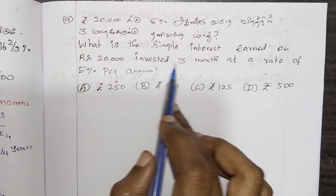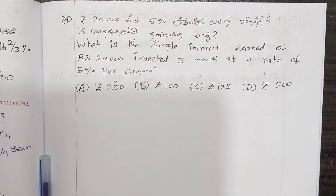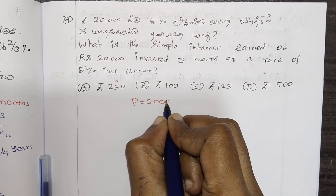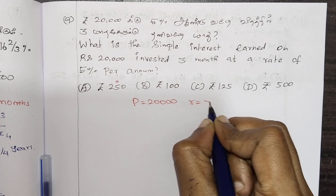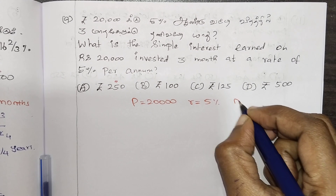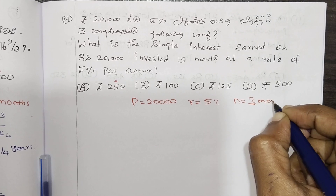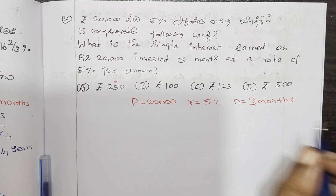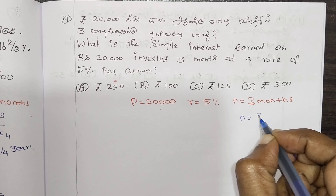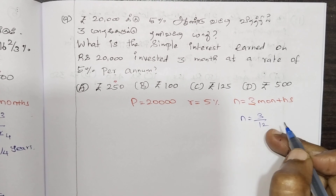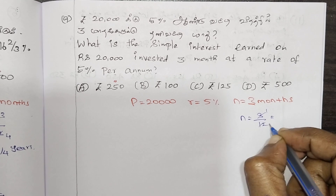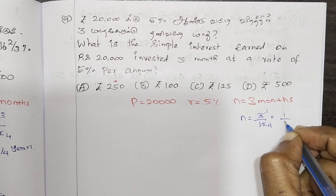Rs 20,000 invested for 3 months at a rate of 5% per annum. You deposit for 3 months. How do you calculate the interest? N equals 3 by 12, and because it is in months, we convert: N equals 1 by 4 year.